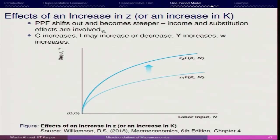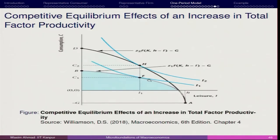And even for the firm, because the representative consumer will have better working conditions and a better standard of living. In this situation, the immediate output would be that the representative consumer was earlier at point F, but now, because of this positive productivity shock, the consumer is moving to I2 and is now at point H.